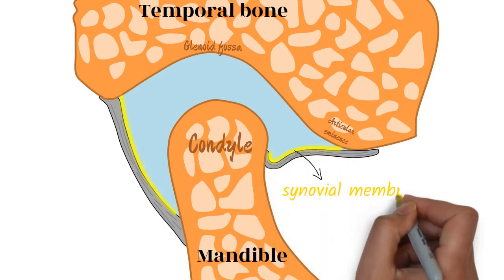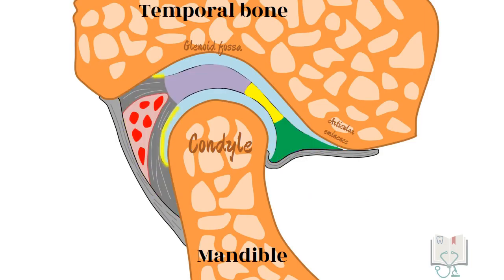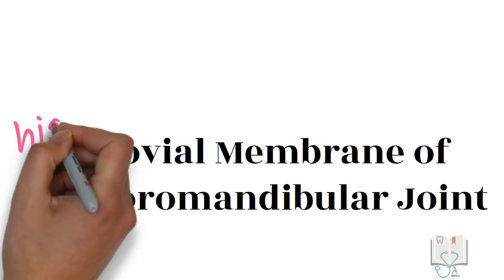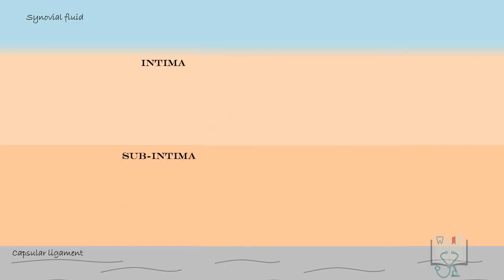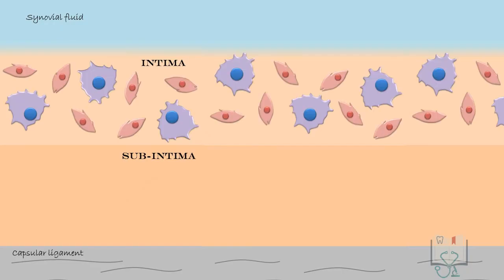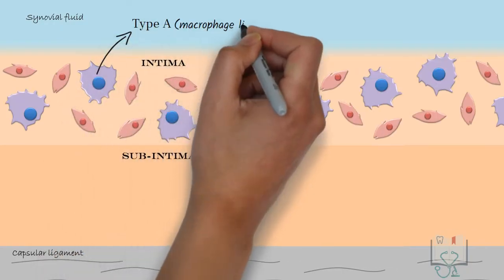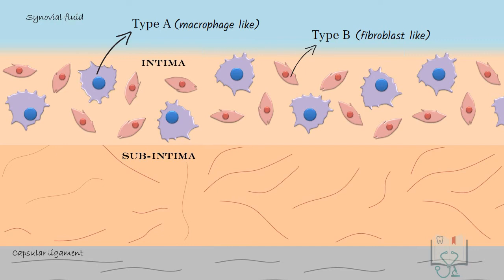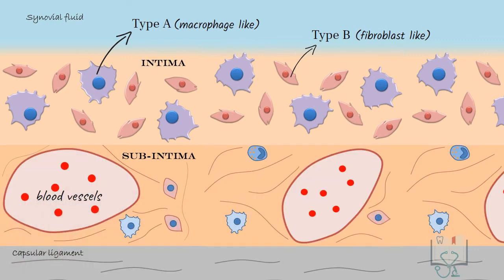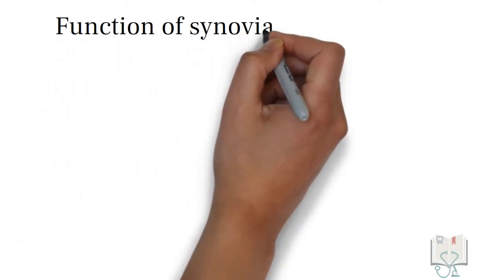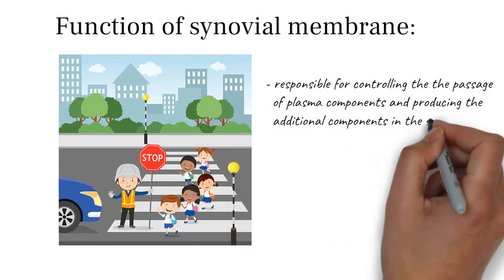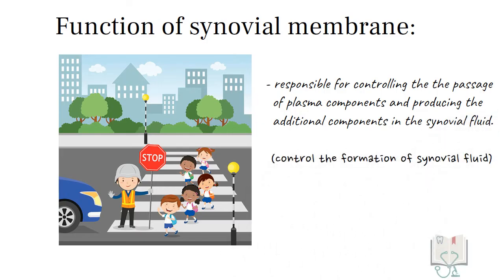The capsule is lined on its inner surface by a synovial membrane. It does not cover the articular surfaces of the joint and the articular disc, except for its bilaminar posterior region. Histologically, the synovial membrane is formed of two layers: intima and subintima. Intima is a cell-rich layer with two types of cells — type A, which are macrophage-like, and type B, which are fibroblast-like. Subintima is formed of loose connective tissue, which has blood vessels and few fibroblasts, macrophages, and muscles. The synovial membrane is responsible for controlling the passage of plasma components and producing additional components of the synovial fluid, hence controlling the formation of synovial fluid.